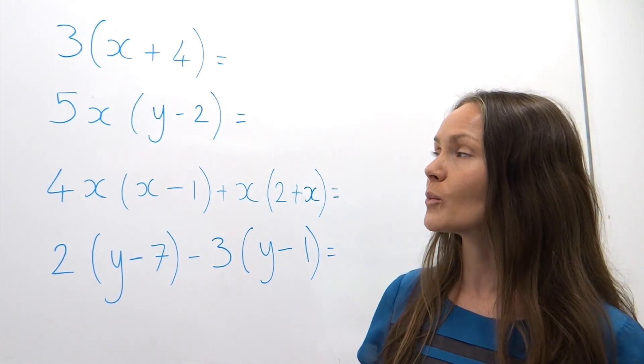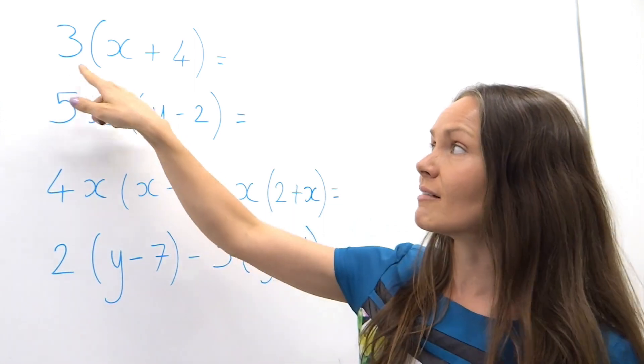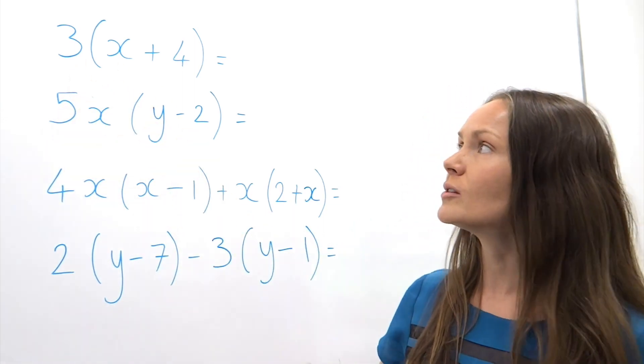When we do these questions, we have to multiply everything that's inside the brackets by whatever's directly in front. We're going to do this in two steps.